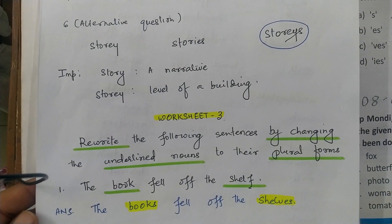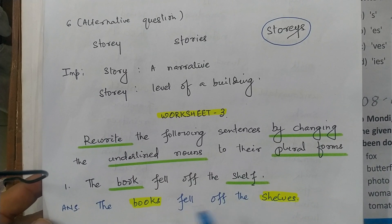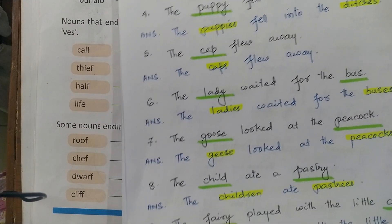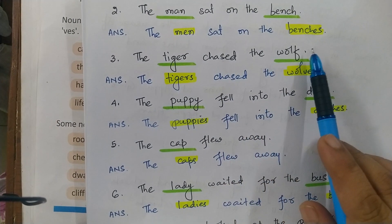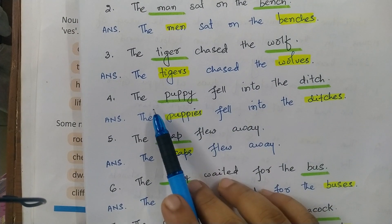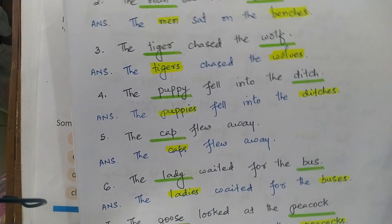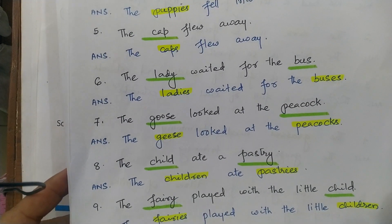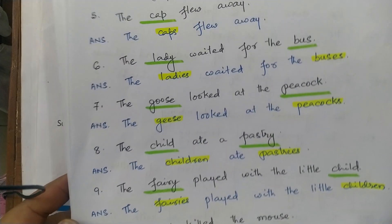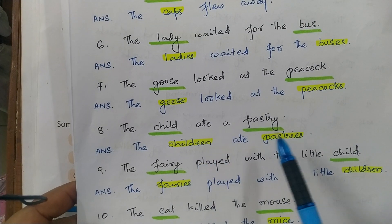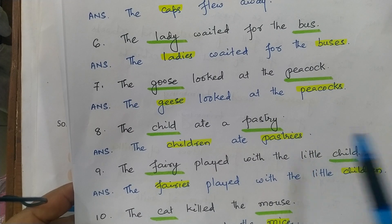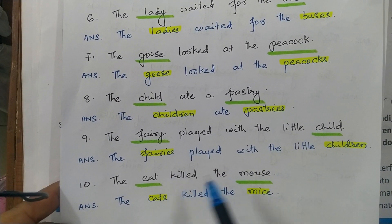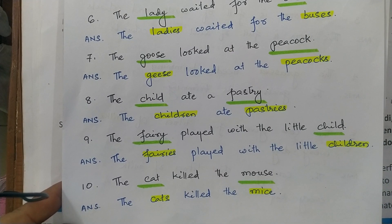Worksheet 3. Rewrite the following sentences by changing the underlined nouns to their plural form. 'The book fell off the shelf' becomes 'The books fell off the shelves' — shelf becomes S-H-E-L-V-E-S. 'The man sat on the bench' becomes 'The men sat on the benches.' 'The tiger chased the wolf' becomes 'The tigers chased the wolves.' 'The puppy fell into the ditch' becomes 'The puppies fell into the ditches.' 'The cap flew away' becomes 'The caps flew away.' 'The lady waited for the bus' becomes 'The ladies waited for the buses.' 'The goose looked at the peacock' becomes 'The geese looked at the peacocks.' 'The child ate a pastry' becomes 'The children ate pastries' — child is irregular, pastry ends in Y preceded by consonant R so becomes IES. 'The fairy played with the little child' becomes 'The fairies played with the little children.' 'The cat killed the mouse' becomes 'The cats killed the mice.'